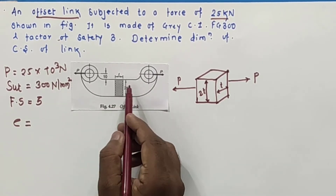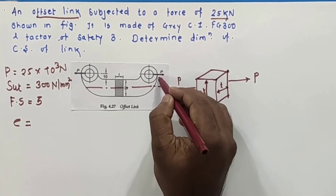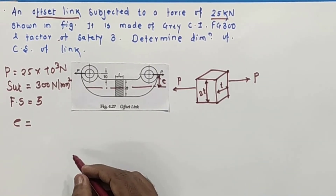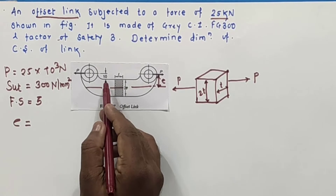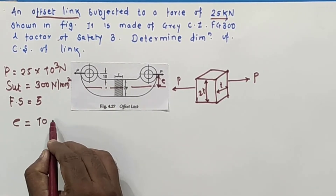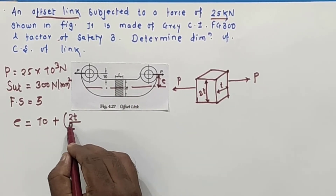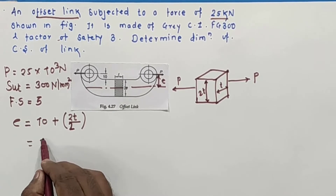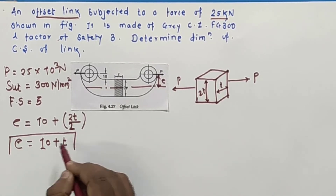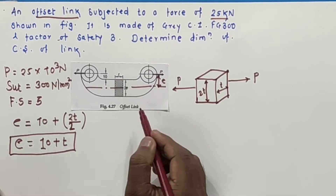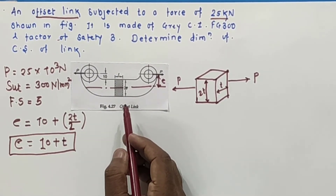The CG of this rectangular cross section will act at its center. This distance is your eccentricity. The load is applied from a distance of 10 mm. So 10 plus half of 2T gives us the eccentricity: 10 plus T. This is very important when designing for eccentric loading. Eccentricity is 10 plus T in this case because it is an offset link.